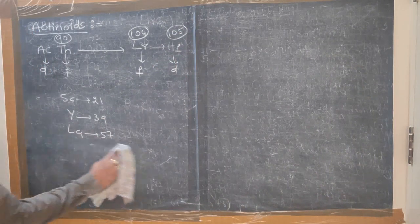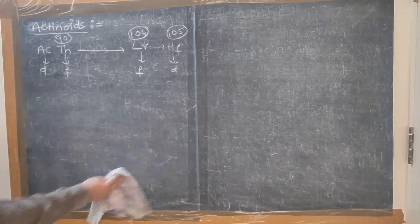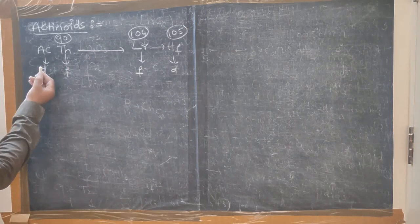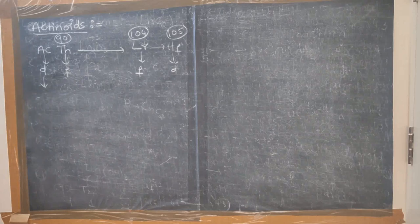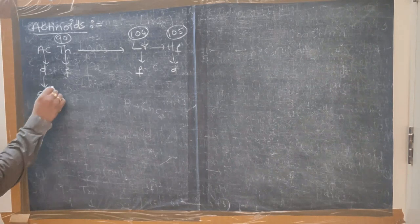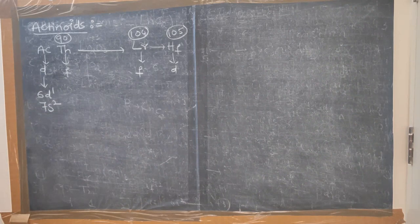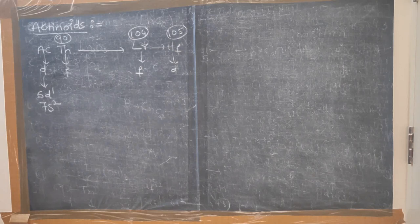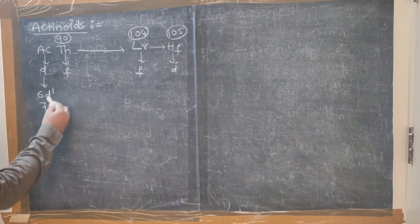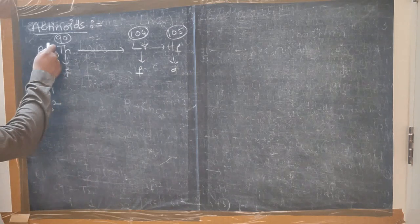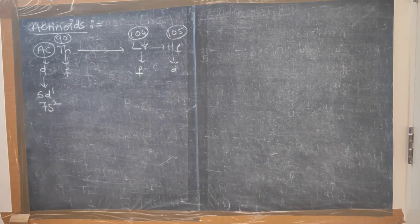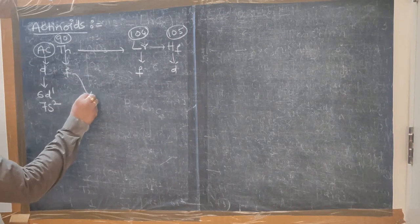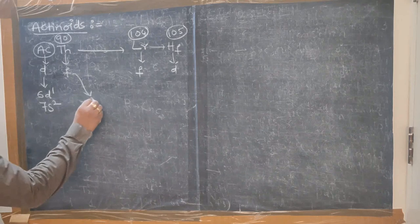We already know the configuration. Actinium has configuration 6D1, 7S2. After actinium, the next element thorium does not belong to D-block; it belongs to F-block. Thorium's configuration is 7S2, 6D2.